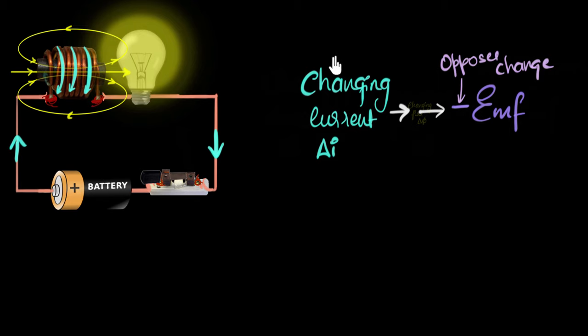And this ability to resist changing currents by inducing an EMF is often what we call inductance. And that's why coils are often called inductors. To be more precise, we should call it self-inductance, because the changing current and the opposition, they're both happening in the same coil. So the coil is sort of opposing itself. And that's why it's called self-inductance.